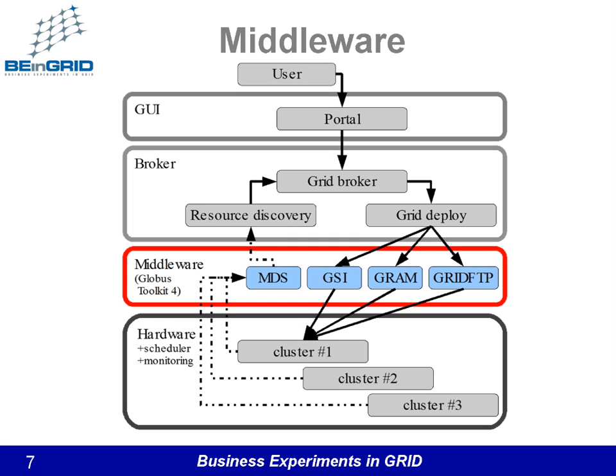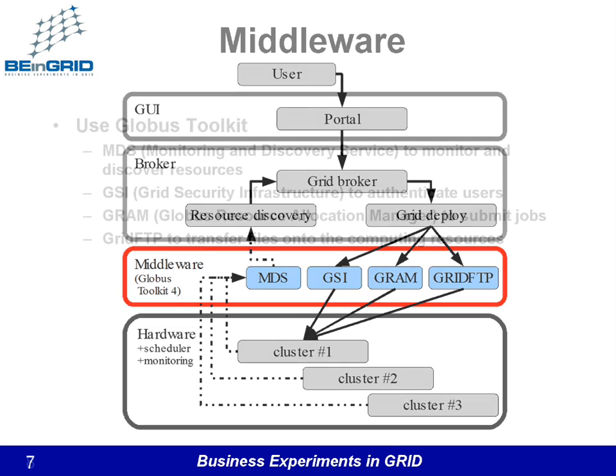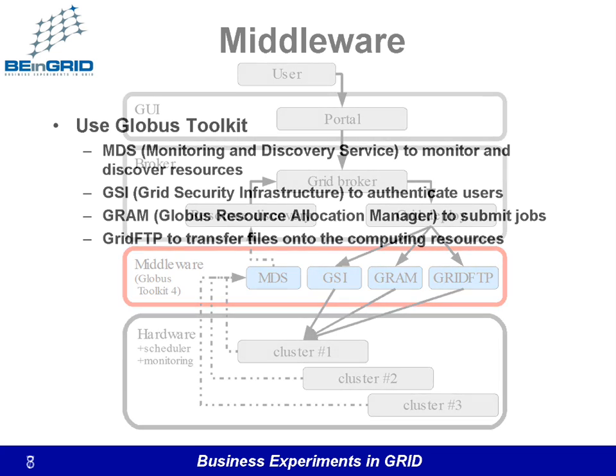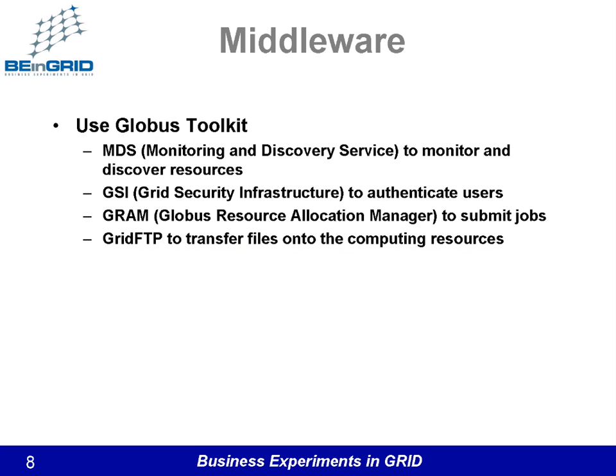The broker makes use of a standard Linux Globus Toolkit 4 distribution. Grid4Architects makes use of several Globus components: the monitoring and discovery service to monitor and discover resources, the grid security infrastructure to authenticate users, the Globus resource allocation manager to submit jobs, and grid FTP to transfer files onto the computing resources.